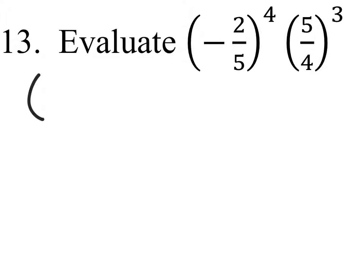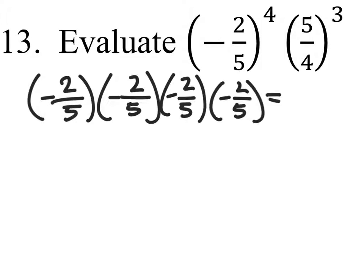So, if we looked at this negative 2 over 5, we have that 4 times. And in this case, we have 4 negatives. 4 is even, so we know our answer is positive. We don't even have to worry about the negatives, then.